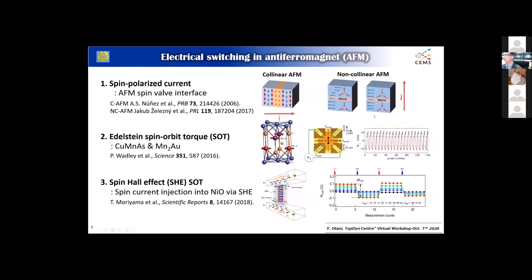Just by passing a current, we can flip the moment of manganese in a controlled manner. As you can see in this paper, they succeeded in controlling switching periodically in a very controllable manner. Also, the spin Hall effect is utilized to switch the magnetic state inside nickel oxide, which was demonstrated by Moriyama and our collaborators and published in Scientific Reports.